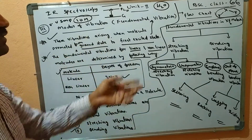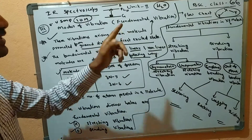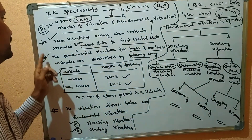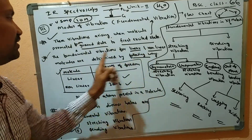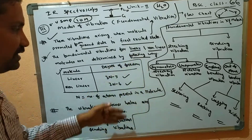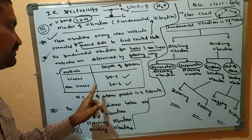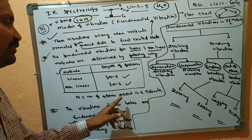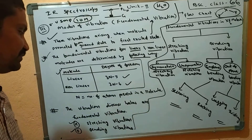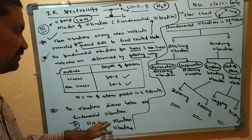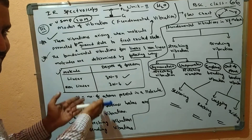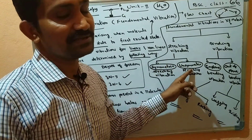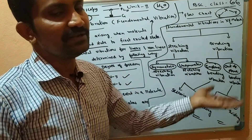These vibrations arise when molecules are promoted from the ground state to the first excited state — these are the fundamental vibrations. For linear molecules, the formula is 3N minus 5; for nonlinear molecules, it is 3N minus 6. N is equal to the number of atoms present in the molecule.